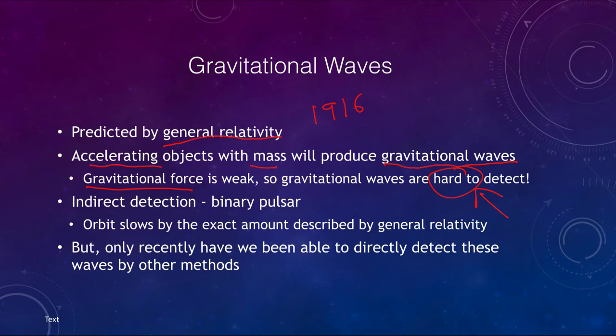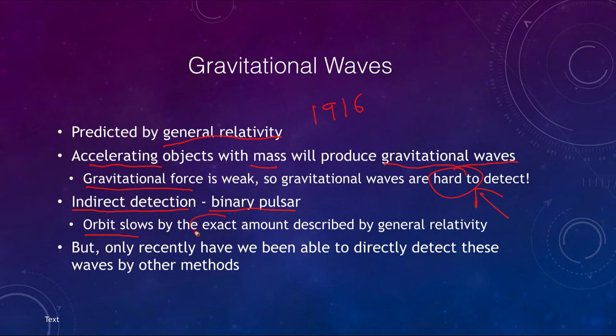Early on, there was an indirect detection in terms of a binary pulsar — two neutron stars orbiting each other. We can determine their orbits, and their orbit is slowing because they are giving off gravitational waves. Energy has to be conserved, so if gravitational waves are being given off, the energy has to come from somewhere in that system. The orbit was found to slow by the exact amount that general relativity described.